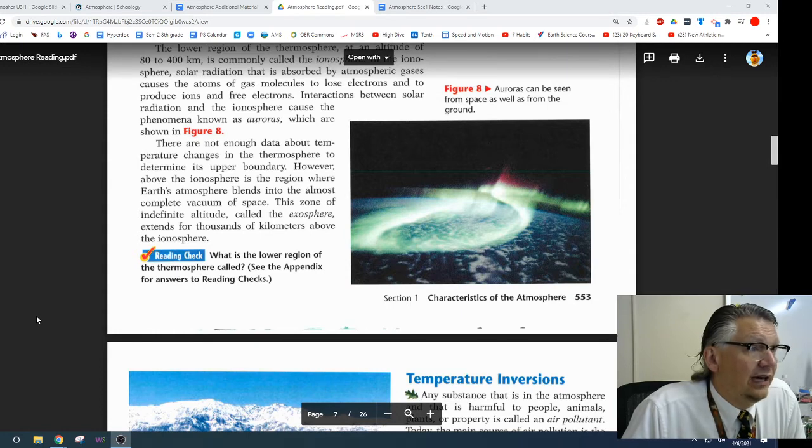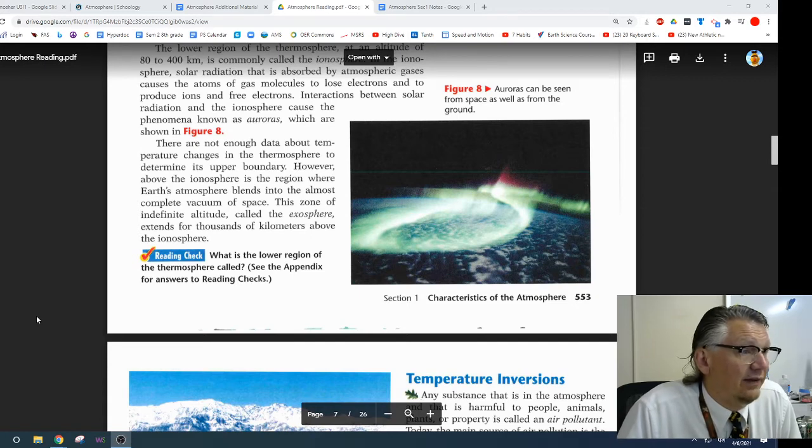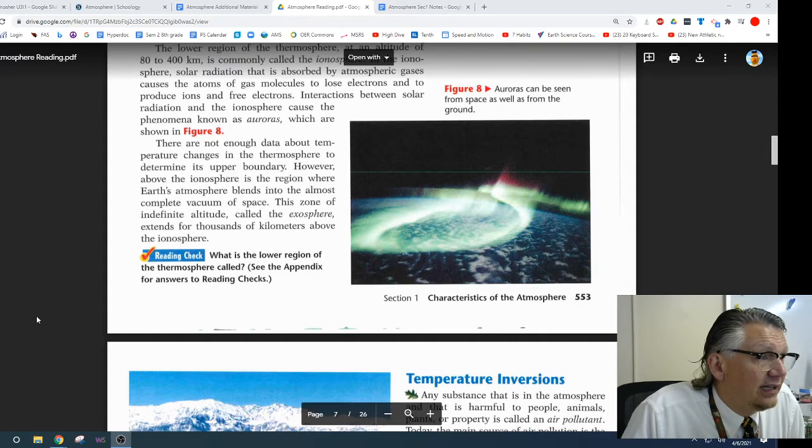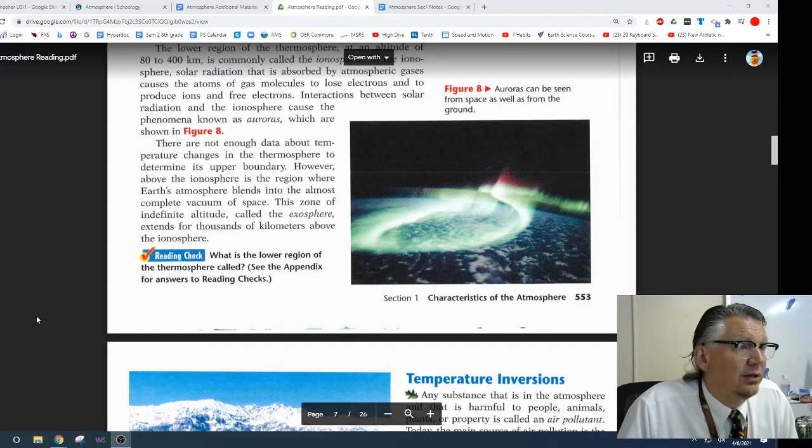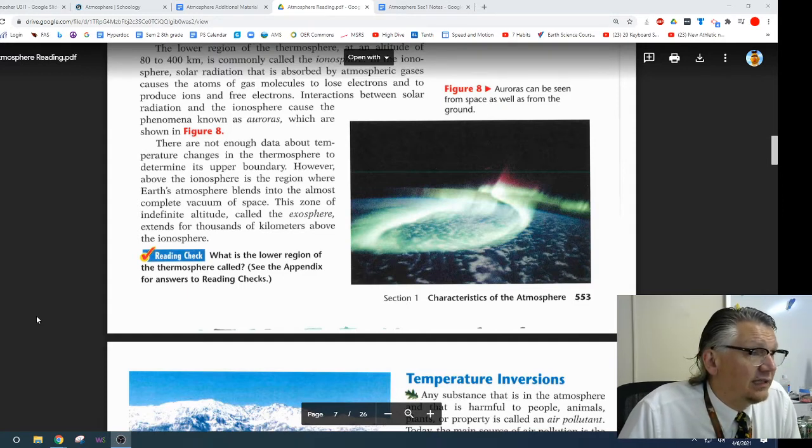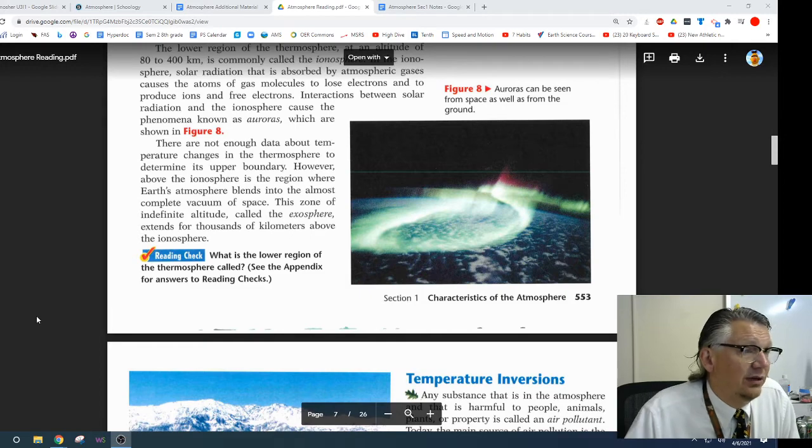However, above the ionosphere is a region where Earth's atmosphere blends into almost complete vacuum of space. This zone of indefinite altitude is called the exosphere. It extends for thousands of kilometers above the ionosphere.